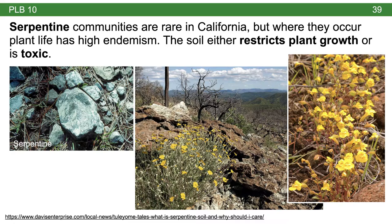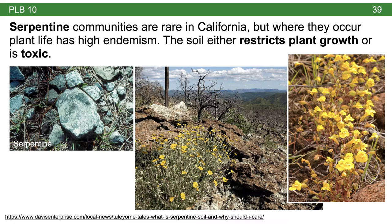The last plant community we'll talk about is Serpentine. Serpentine is interesting in California because it's rare, and it has a soil composition that is toxic to most plant life. Most plants can't live in this toxic soil environment, which means you end up with plants that live on serpentine and nowhere else. This goes back to the idea of endemism — the soil restricts plant growth such that only a few species can survive in that environment.